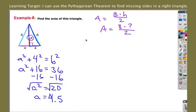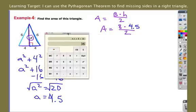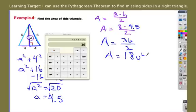And now I'm not done, because remember the question said, what is the area? So I've got to come back over here. I'm going to erase this question mark, and I'm going to plug in 4.5. And now I'm ready to plug this in. 8 times 4 and a half gives me 36. So my area equals 36 divided by 2. So my area is 18 units squared.